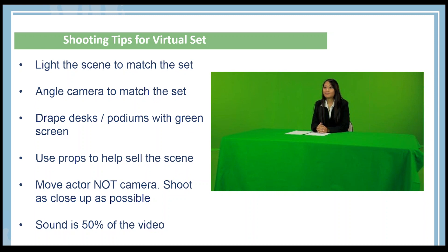Another good tip is move the actor, not the camera. When there are multiple angles, you don't need to readjust your camera and move it all around. You can just turn your actor, and if they're sitting at a desk, just turn the desk to match the angle. It's one of those nice things with the virtual set that can simplify your shooting.